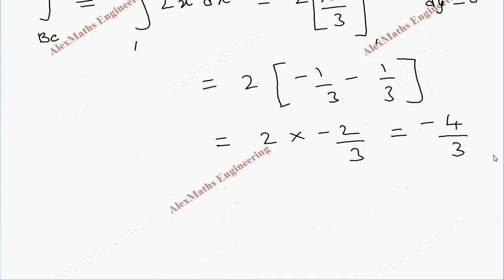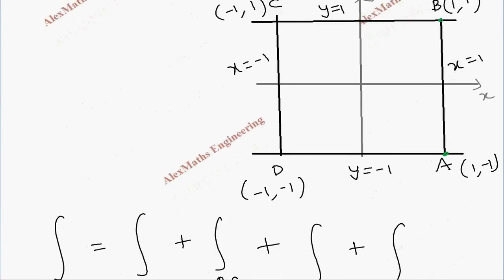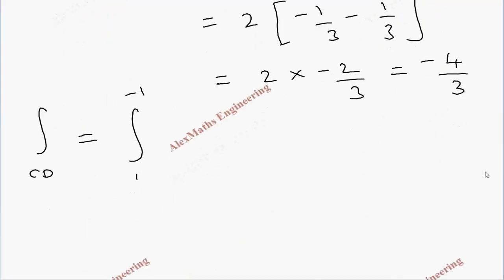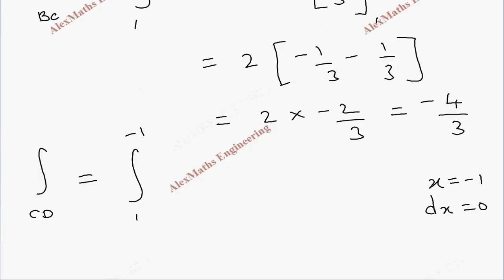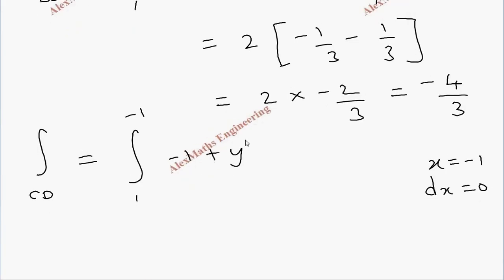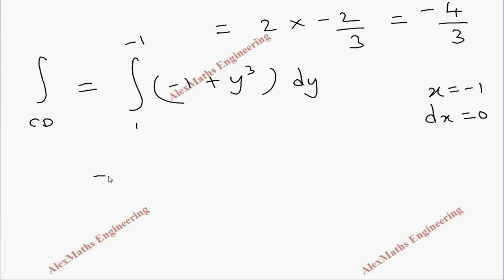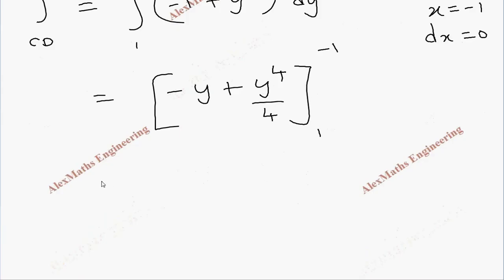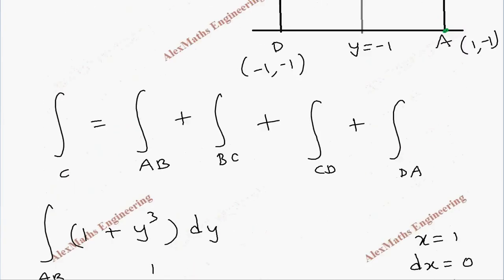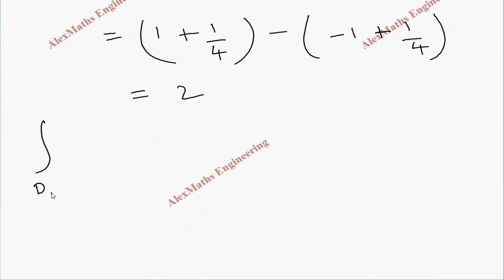For path CD, y varies from 1 to −1 and the equation is x = −1, so dx = 0. The first term vanishes. With x = −1, x³ = −1, so the integrand becomes (−1 + y³) dy. Integrating gives [−y + y⁴/4] from 1 to −1, which equals 2.